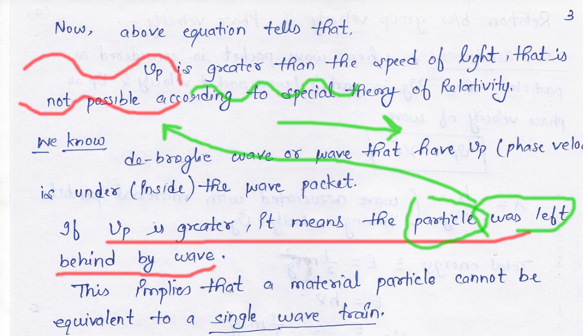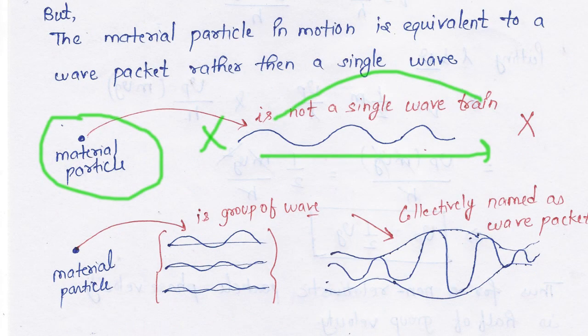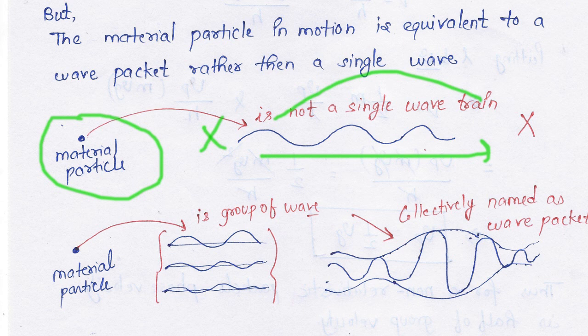If Vp is greater, it means the particle was left behind by the wave. This implies that a material particle cannot be equivalent to a single wave train.